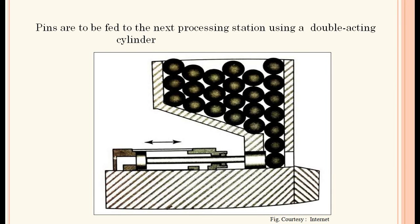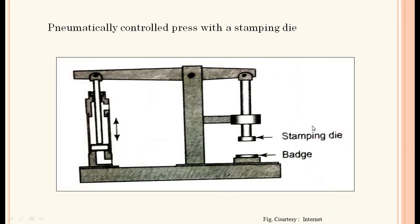Pins are to be fed to the next processing station using a double acting cylinder. The cylinder moves in one direction and presses one component at a time through an opening toward the next operation — moving components one after another as required at the next station. In a daily control to press with a stamping die, the cylinder acts as a lever, extending and retracting vertically so the stamping die comes down on the badge and then moves back up.